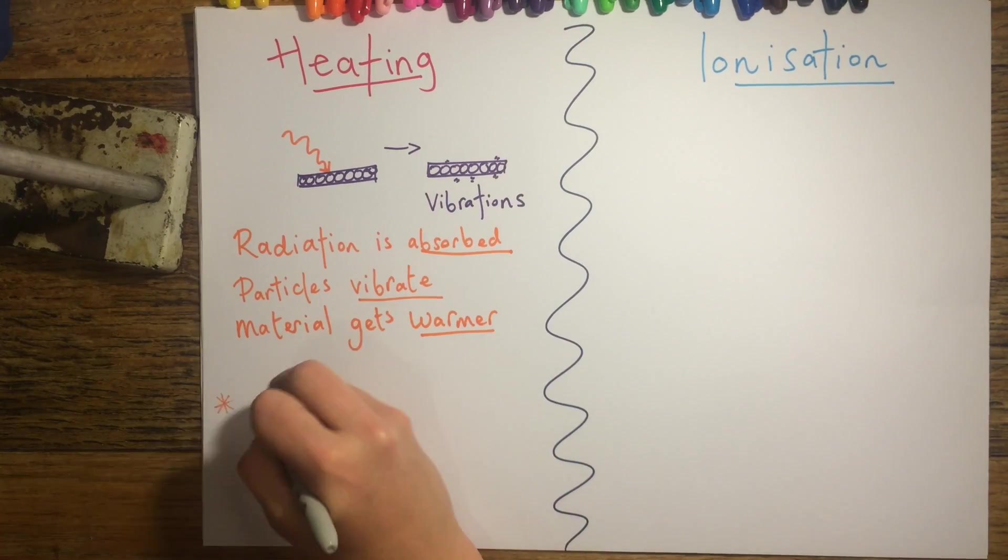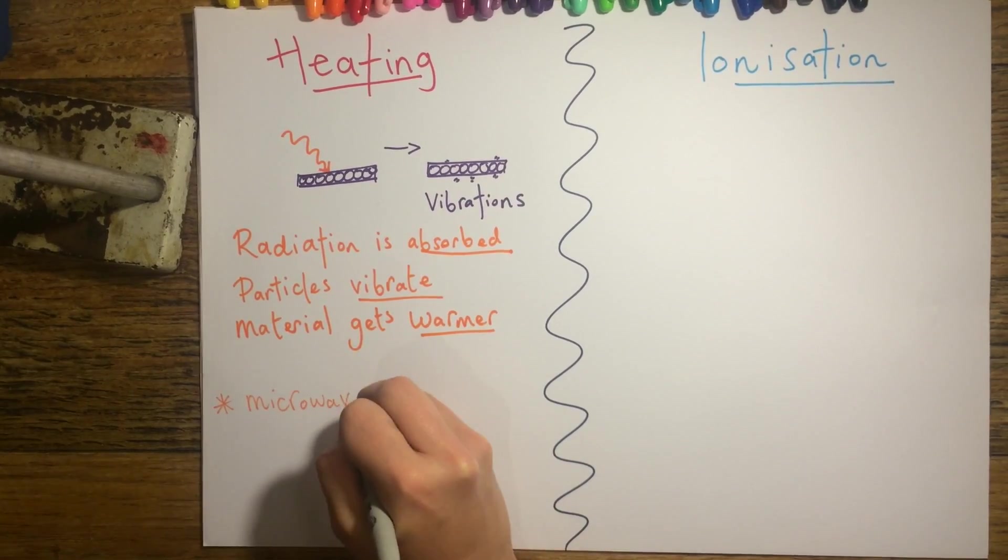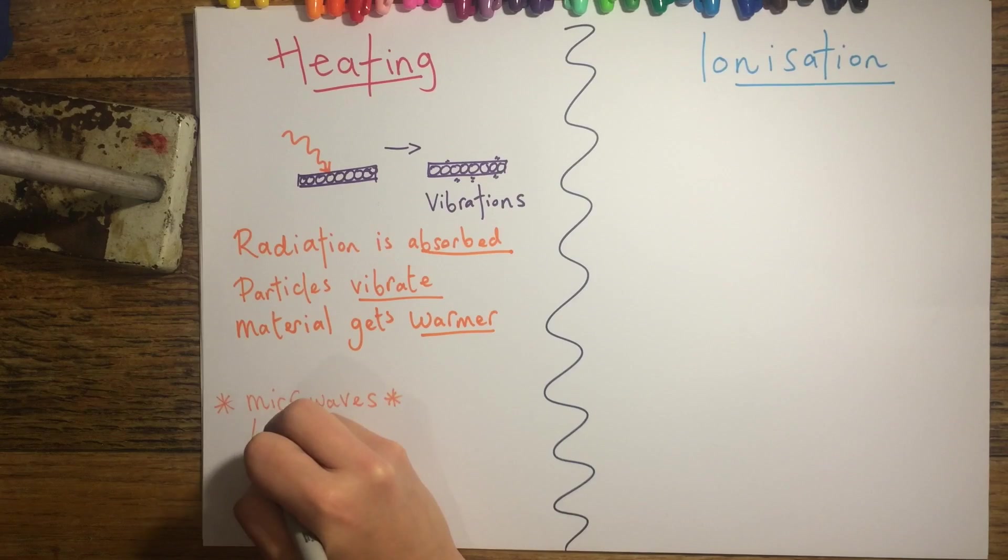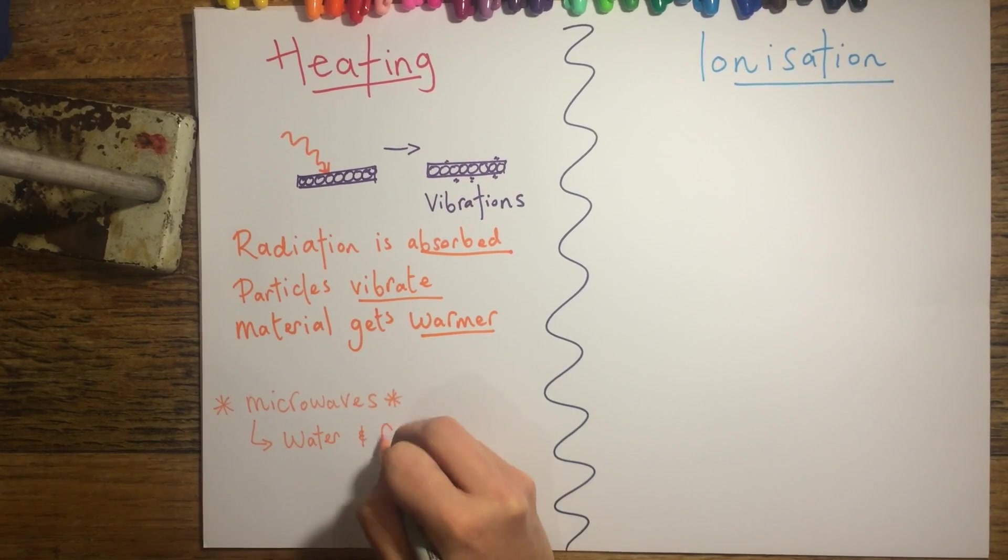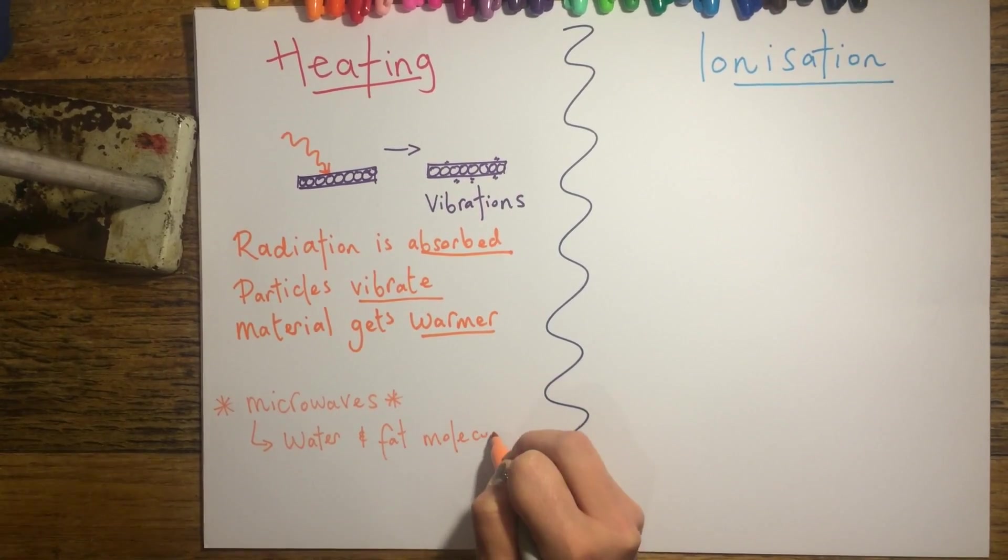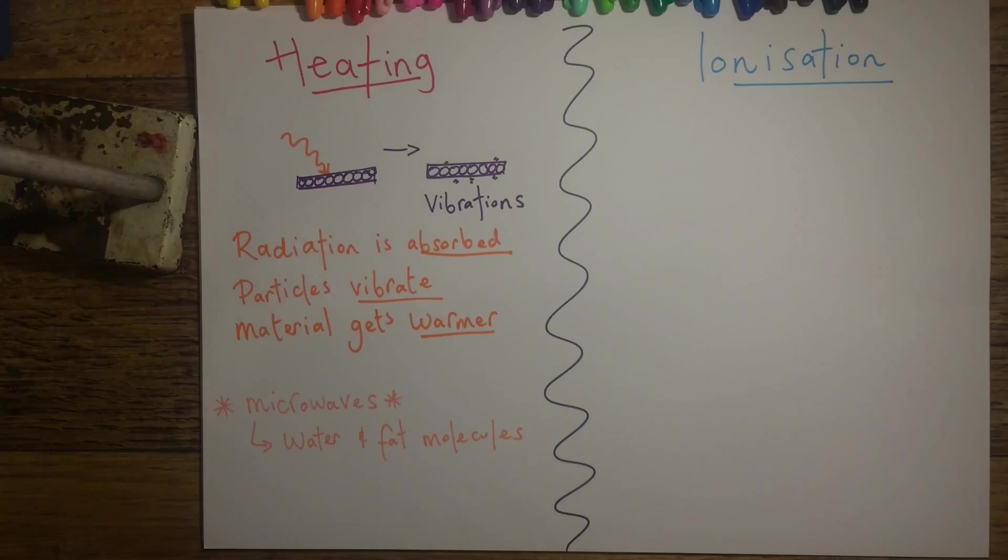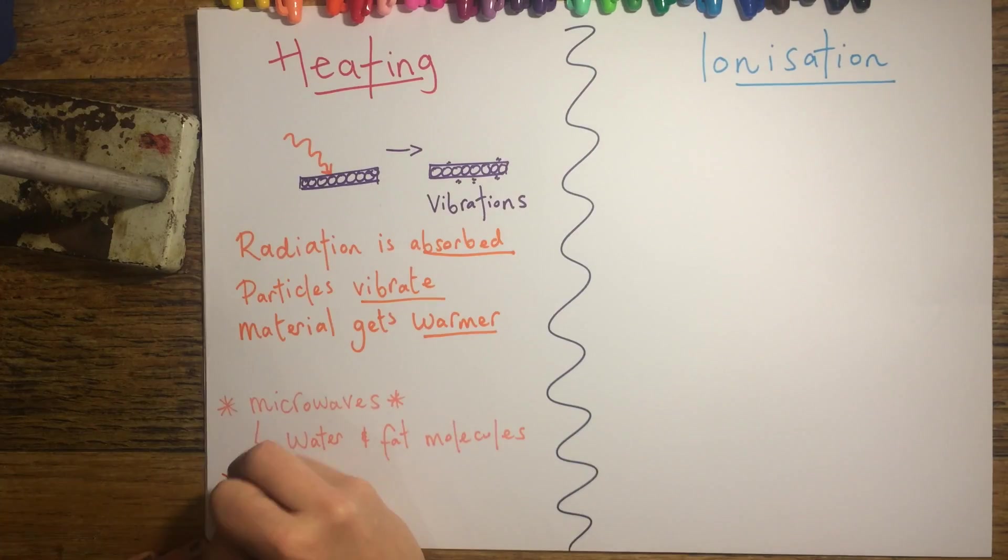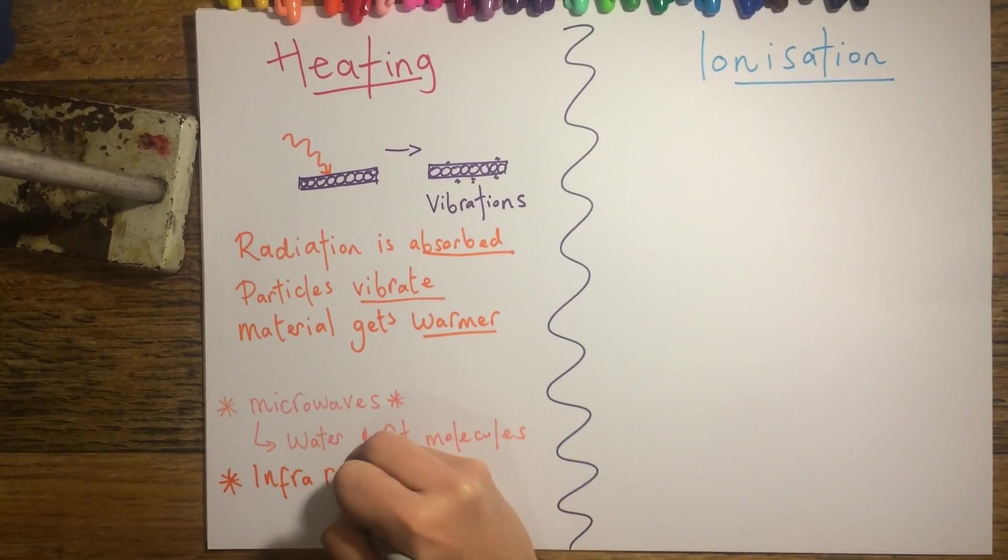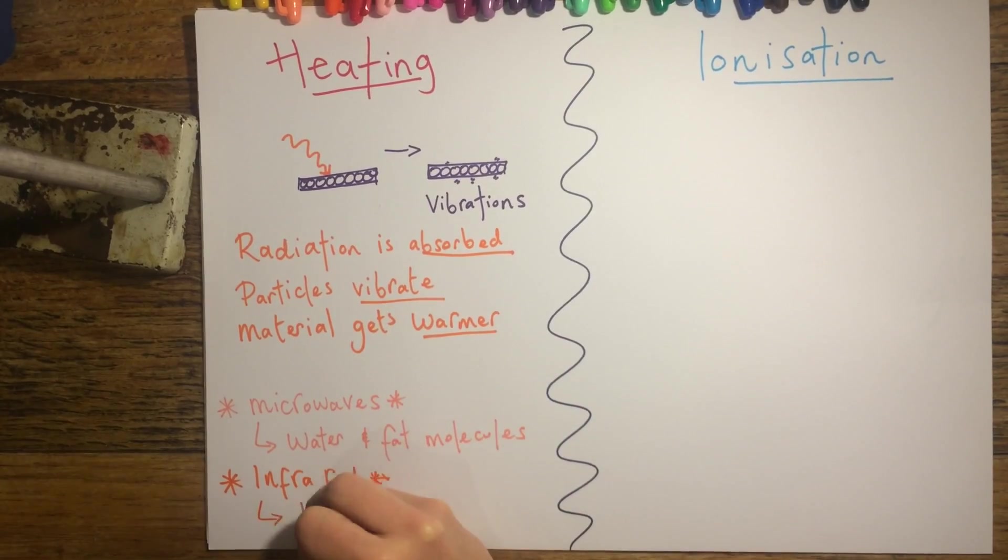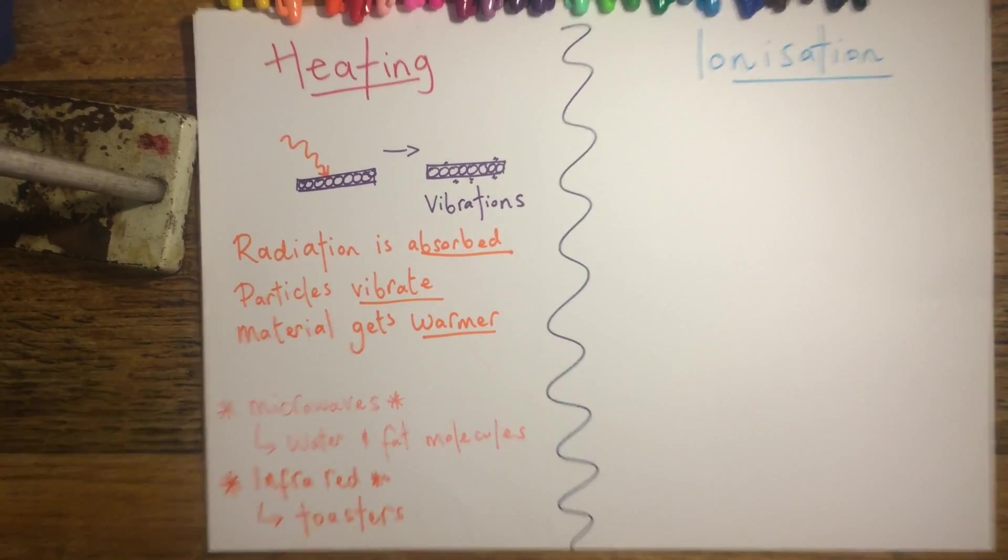You need to know which radiations are responsible for the heating effect. One of them is microwave radiation, which is strongly absorbed by water and fat molecules, which makes sense because we use microwaves to heat our food up. Infrared also has a heating effect when its photons are absorbed by material, and we utilise this when we toast bread in a toaster.